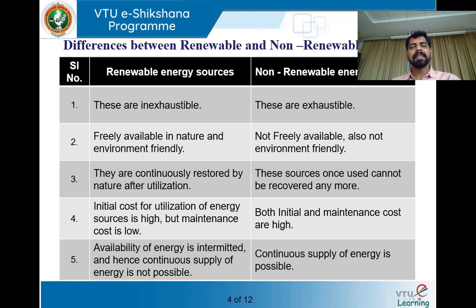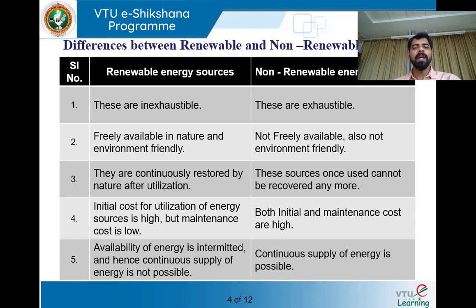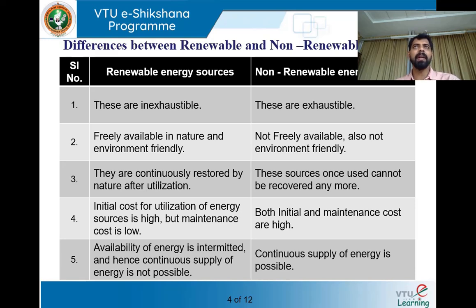One more difference: energy availability from renewable sources is continuous but intermittent. Why intermittent? These are season dependent. Even though the sun is available every day, its intensity varies depending on the season and position on Earth. Based on the intensity, the energy supply will also be intermittent. Similarly, water is not available throughout the year — it is also season dependent. So the supply of energy convertible from renewable sources is intermittent in nature, meaning we cannot expect a continuous supply of energy from them.